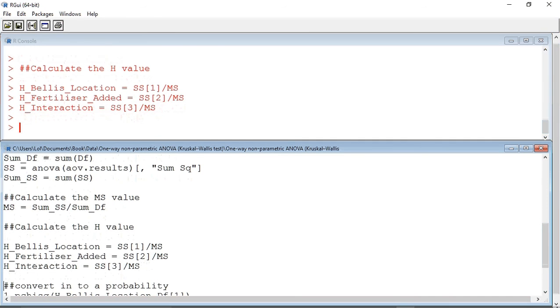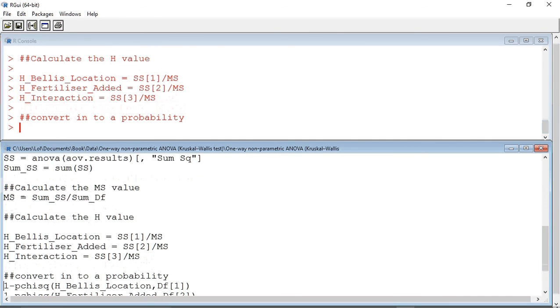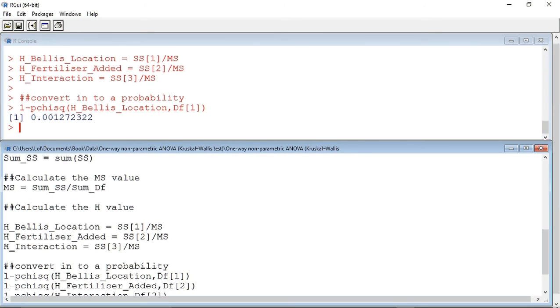This next line calculates the probability for location and we can see it gives us a value of 0.001. So what is the meaning of the p-value?